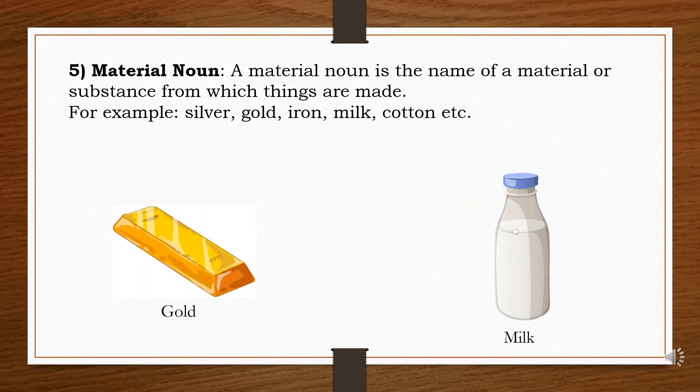The fifth kind of noun that we are going to study is the material noun. A material noun is the name of a material or substance from which things are made. In any sentence, when we see the name of the material or substance from which something is made, it is the material noun. Examples include: carbon, steel, silver, gold, iron, milk, cotton, etc.